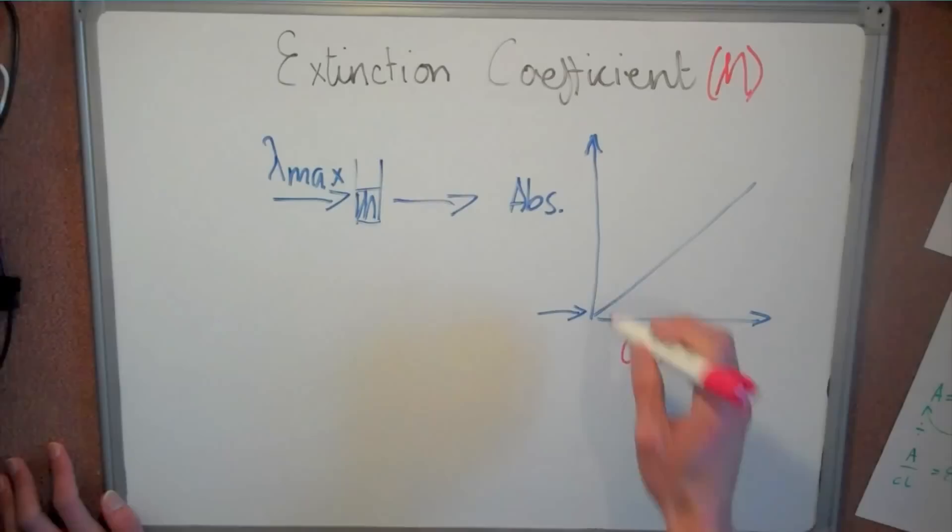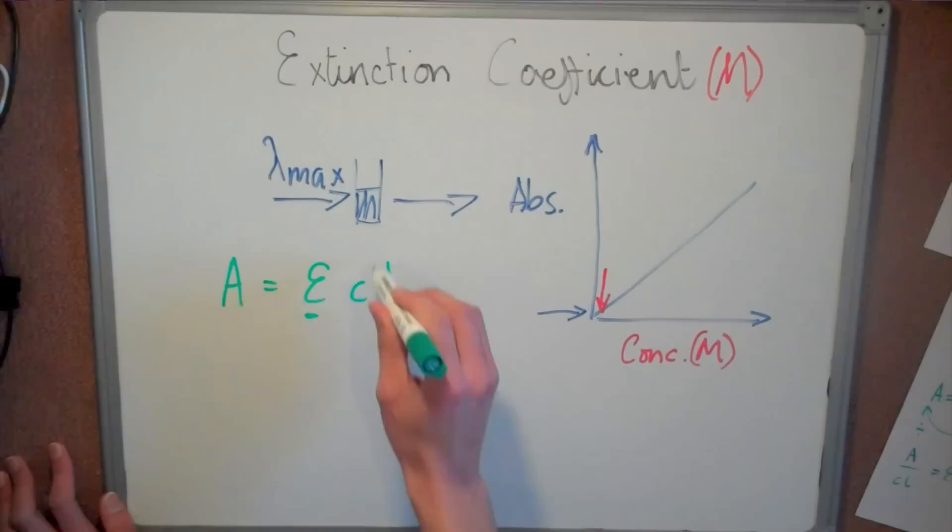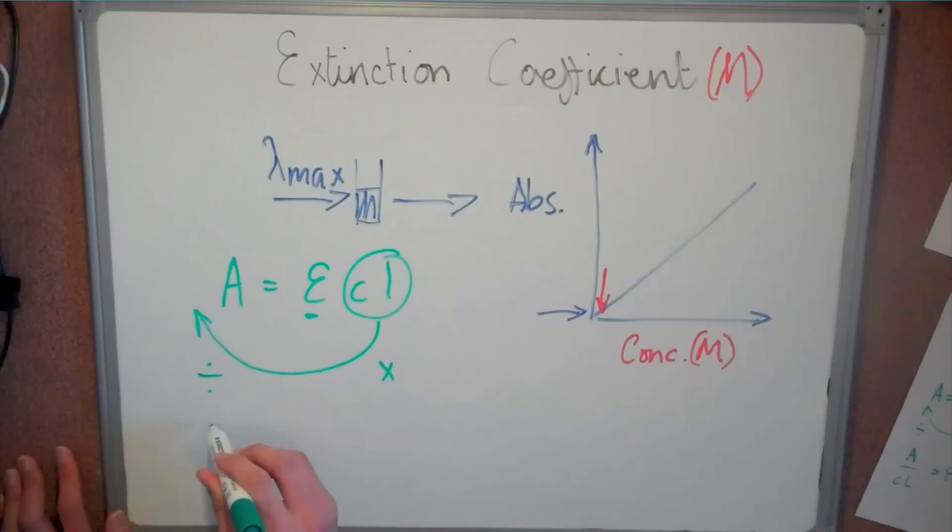To work out extinction coefficient, we rearrange the Beer-Lambert law to make the extinction coefficient the subject. We move times cn to the other side past the equals sign, so we inverse the function to divide.